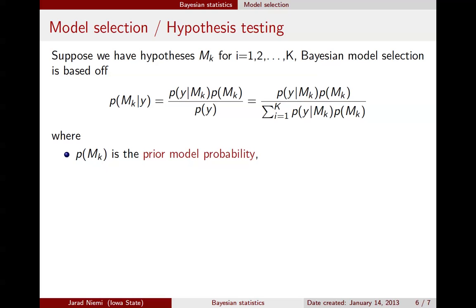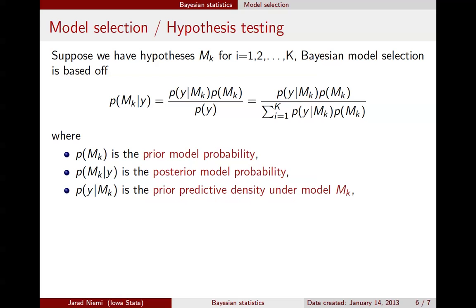To reiterate the terminology: p(m_k) is the prior model probability — an actual number between 0 and 1. p(m_k|y) is the posterior model probability, again a number between 0 and 1, that tells us how to update our prior model probability. p(y|m_k) is the prior predictive density under model m_k, which can be expanded as the integral of the statistical model p(y|theta) times the prior for the parameter under model m_k, integrating out the parameters theta in that model.